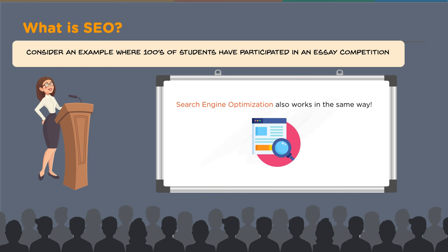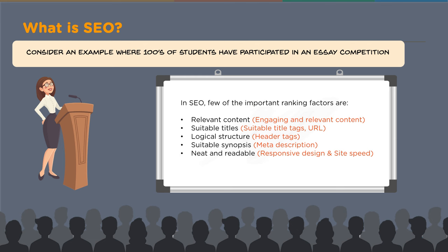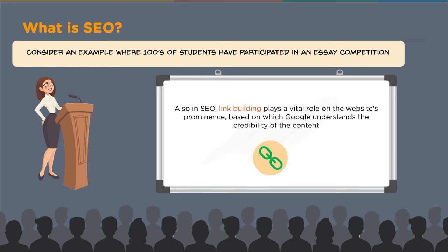Those essay criteria map exactly to SEO: relevant content, titles for pages, structure, a synopsis — called the meta description — and readable content. Site speed is important for readability, and responsive design means your page needs to load on both desktop and mobile. Google is the judge determining which page ranks number one, two, three, and so on. Link building — both internally and externally — also plays a vital role.